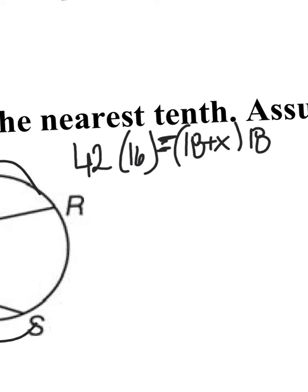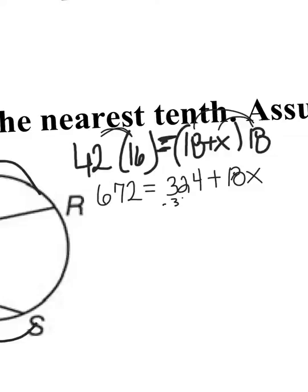I'm going to distribute. 42 times 16 is going to be 672 equals 18 times 18, which is 324 plus 18X. I want to get my X by itself. I'm going to subtract 324 from both sides to leave that 18X by itself. When I subtract that 324, we have 18X equals 348.